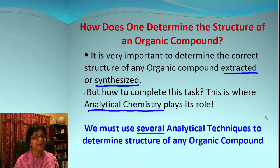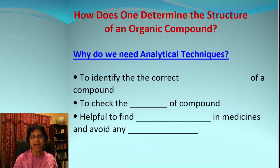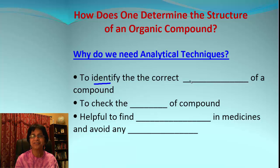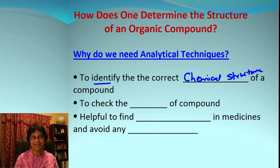We cannot simply use one technique and say this is the final structure; we must use several techniques to find out if the structure we are assigning is the correct one. The first reason we need analytical techniques is to identify the correct chemical structure for a compound. When we say chemical structure, it is not just the molecular formula — it also includes the functional groups, such as whether a hydroxide group is present, where the group is located, and how many groups there are.